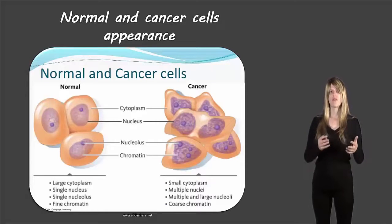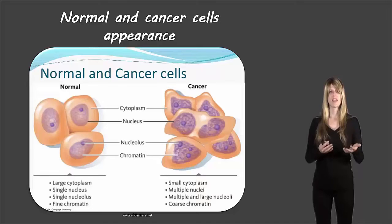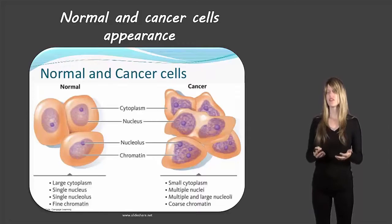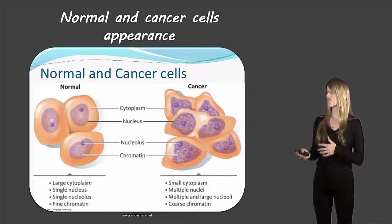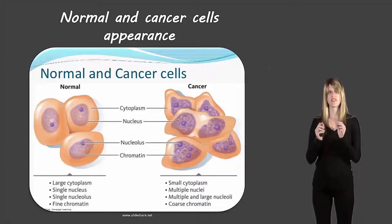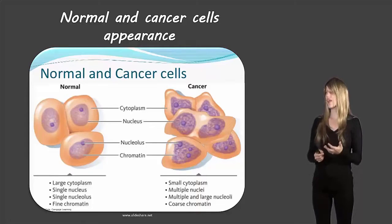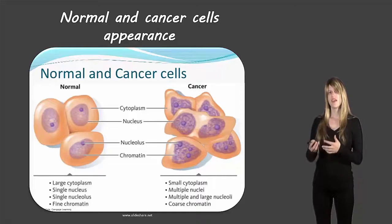Let's take a look at how regular cells look compared to cancer cells, because doctors are able to look at cells under a microscope and determine if they're regular or cancer cells. In normal cells there is a certain amount of cytoplasm, whereas in a cancer cell there's much less cytoplasm and the nucleus looks much bigger. Also there's only a single nucleus in a regular cell, where there may be multiple nuclei in a cancer cell, and a single nucleolus versus multiple nucleoli in a cancer cell.